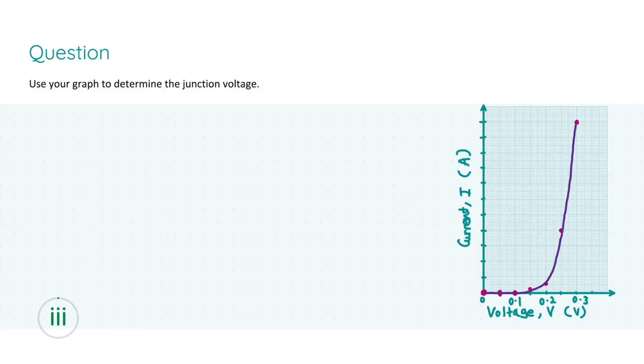Now we're asked to determine using the graph the junction voltage. The junction voltage is for what value of the voltage we're going to get a very quickly increasing current, roughly around the turning point. I've just copied this graph over. You can see we have a steady curve along these points here, and then once it hits the region of around 0.2 volts, you can see it almost goes straight up in a vertical line.